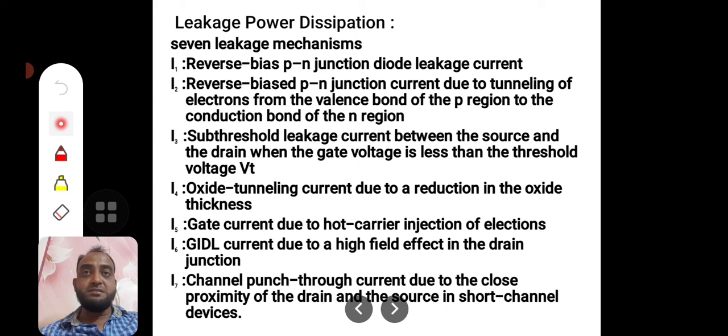The other mechanism of leakage current is oxide tunneling current due to reduction of oxide thickness. When the oxide thickness is made very little, nowadays oxide thicknesses are becoming almost atomic range. This atomic range of thickness is not capable of avoiding charge carriers on either side. Charge carriers are tunneling through the oxide layer and entering into the channel. This is called oxide tunneling.